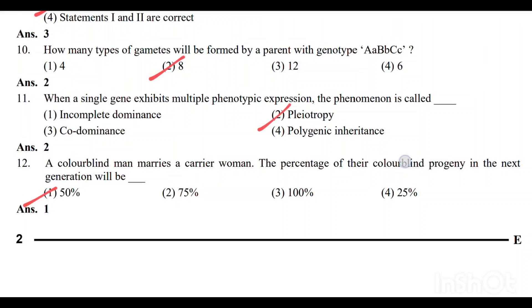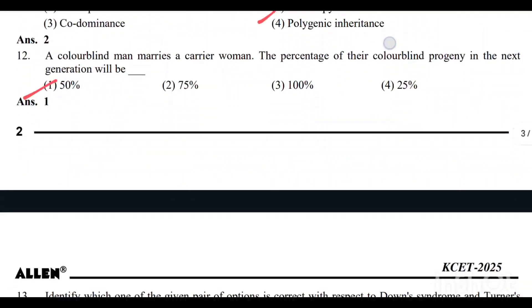Question number 12: A colorblind man marries a carrier woman. The percentage of their colorblind progeny in the next generation will be 50%. Option 1 is the correct answer.